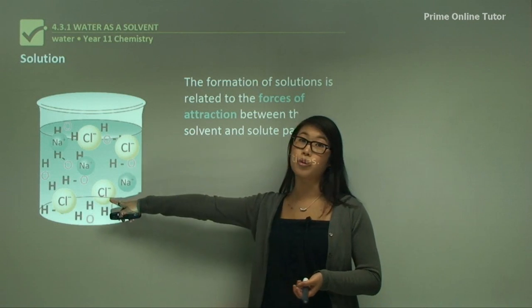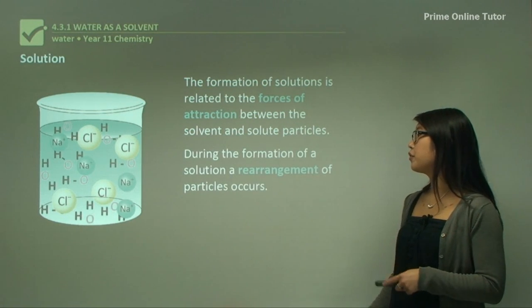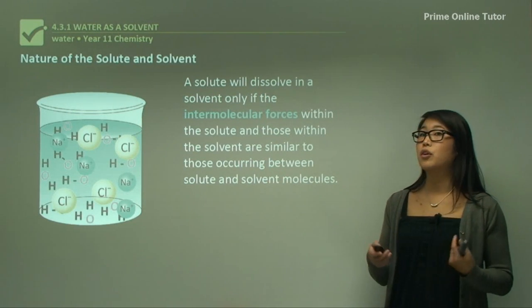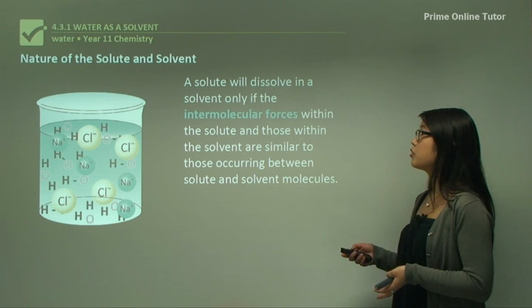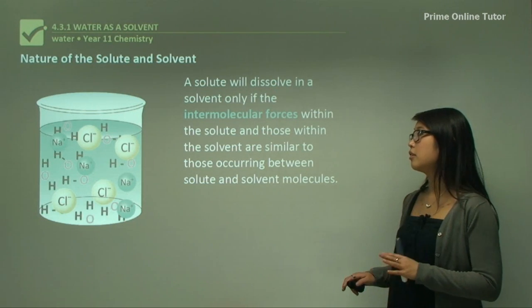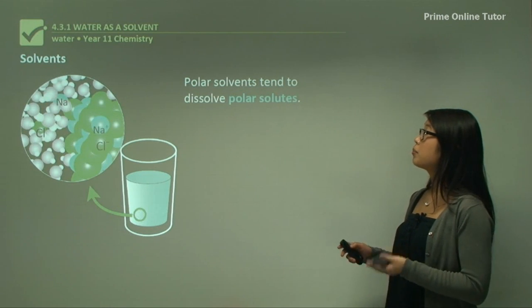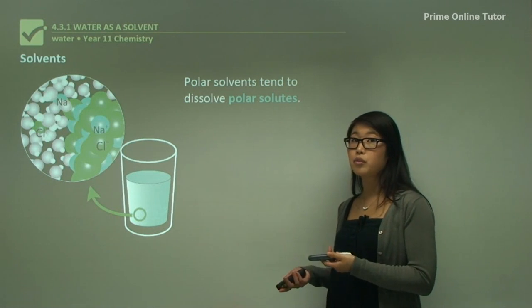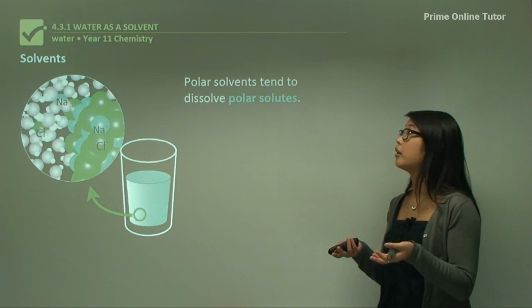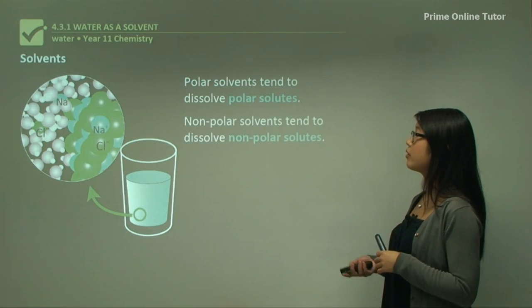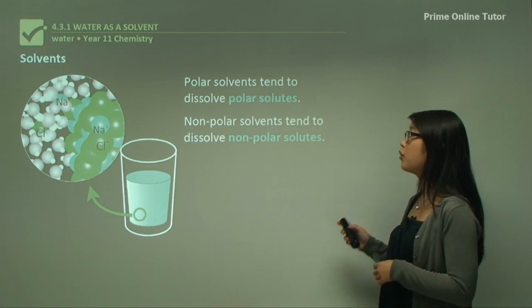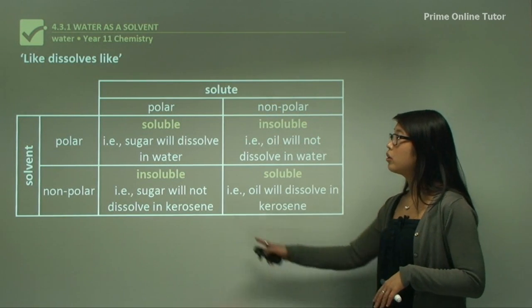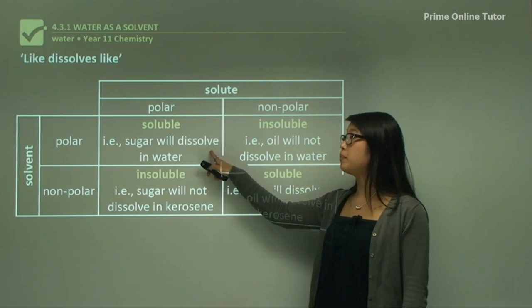We're looking at how water molecules interact with sodium ions and chloride ions. During the formation of a solution there's a rearrangement of particles, and a solute will dissolve in a solvent only if the intermolecular forces within the solute and solvent are similar. Polar solvents tend to dissolve polar solutes — polar water will dissolve something polar. Nonpolar solvents tend to dissolve nonpolar solutes. Looking at this table, polar and polar will mix and are soluble.